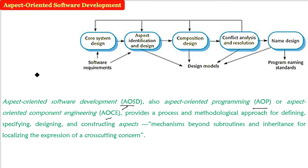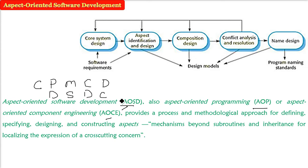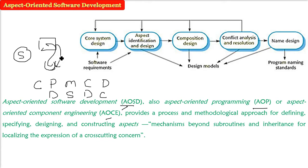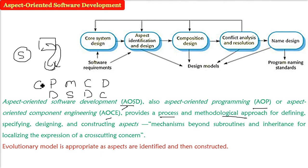In a software development life cycle, we start with communication, then planning, then modeling and designing, then construction — actual development — then deployment. AOSD, AOP, and AOC are all about specifying and telling you what the method will be. We are talking about DSDC: Defining, Specifying, Designing, and Constructing. Previously we were doing subroutines and inheriting functions and classes; now we are talking about process and methodological approaches for defining, specifying, designing, and constructing aspects so that cross-cutting concerns can be addressed.